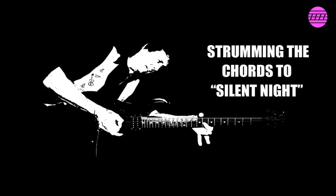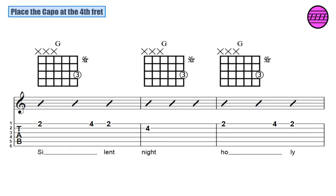Strumming the Chords to Silent Night. Place the capo at the fourth fret.